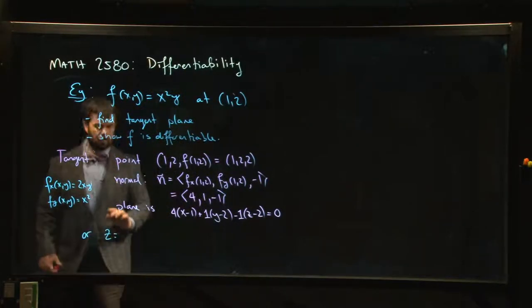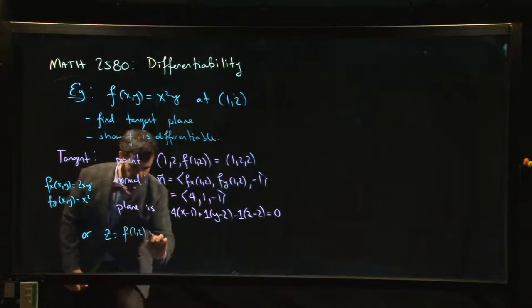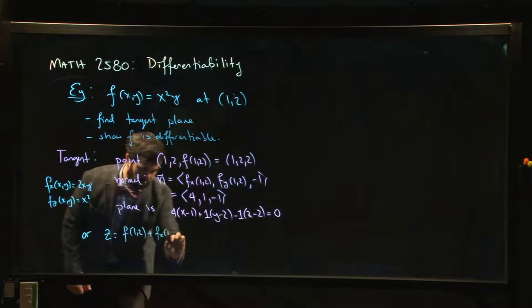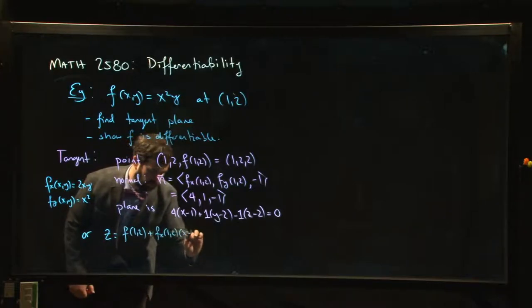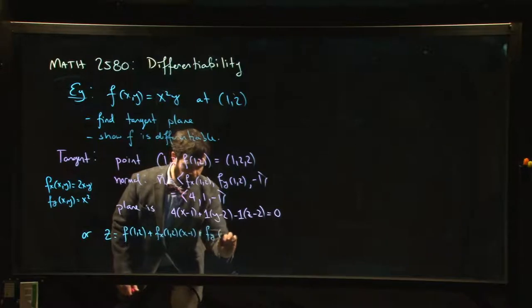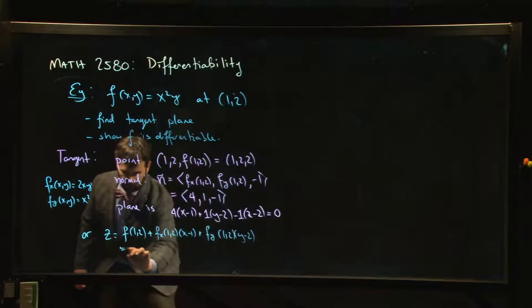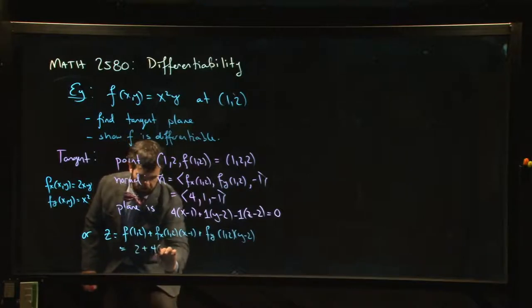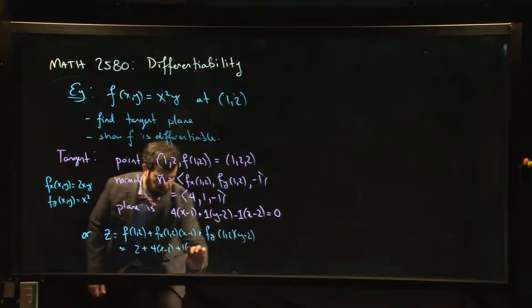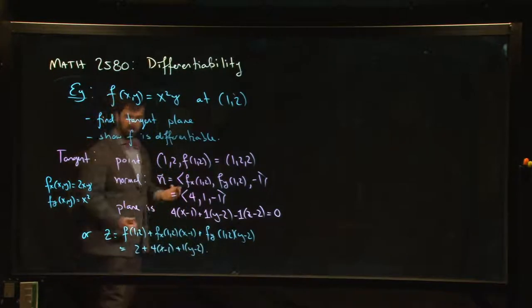Remember, the linear approximation is f at (1,2) plus fx at (1,2) times (x minus 1) plus fy at (1,2) times (y minus 2), and so that gives you 2 plus 4 times (x minus 1) plus 1 times (y minus 2). Okay?